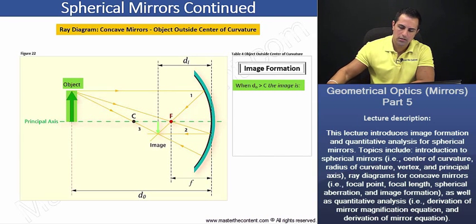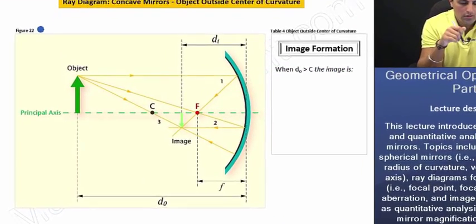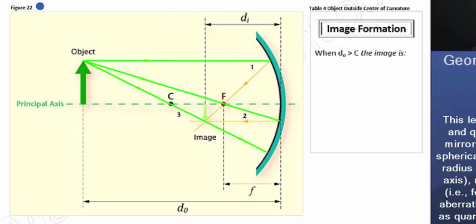When the object lays outside the center of curvature. If we take a look here now at figure 22, even though we only needed two rays, we see ray tracing being done for rays 1, 2, and 3.